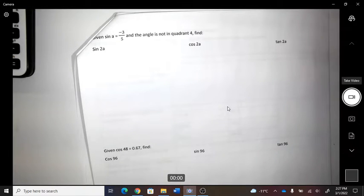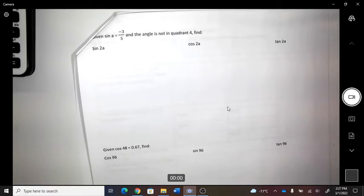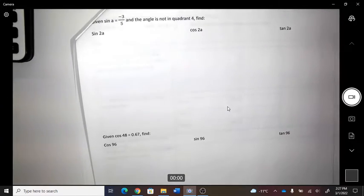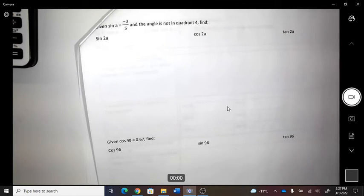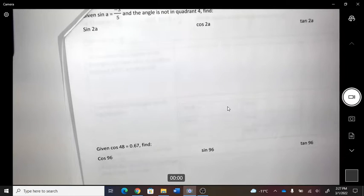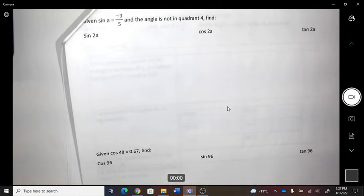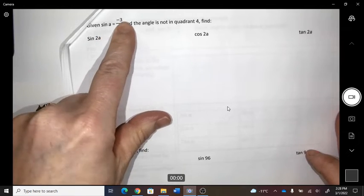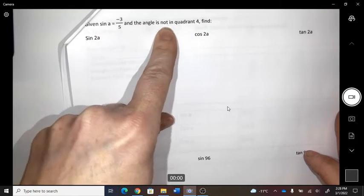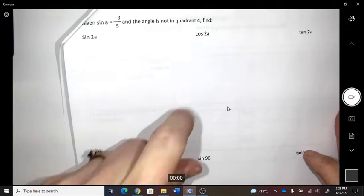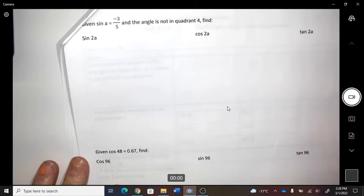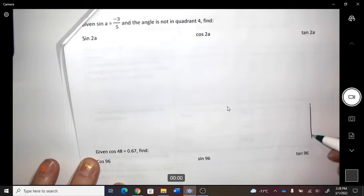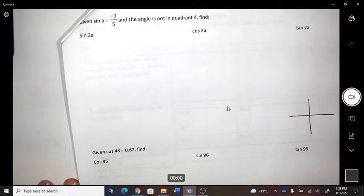Alright, so this time we're going to use a different formula. Yesterday we used the sum and subtraction formulas, and today we're going to use the double angle. Here's what I've been given. I've been given the sine ratio, and I've been told that it's not in quadrant 4. First of all, with that info, can you tell me which quadrants I'm in?